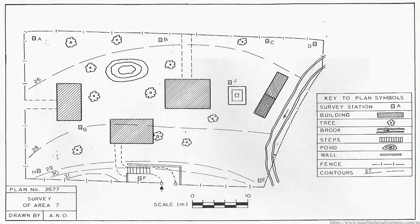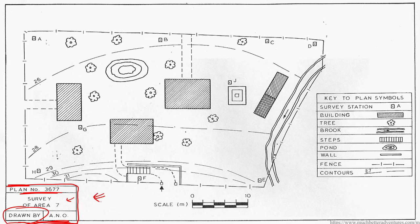By the end of this session, you are going to learn how to produce a plan similar to this one. Let's go through the main elements. In the corner you need to include the plan number or title, your name or survey group, and some main information. You also need to include the scale — as you can see here, this is a graphical scale, and you can also express scale as a ratio, for example 1 to 200 or 1 to 300.